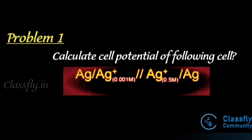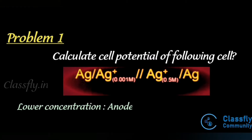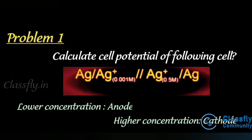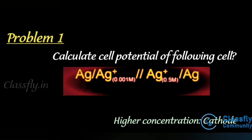The cell is connected via a salt bridge to Ag⁺ (0.5 M) | Ag. To determine which is anode and which is cathode, the key factor is concentration: lower concentration acts as anode and higher concentration acts as cathode.